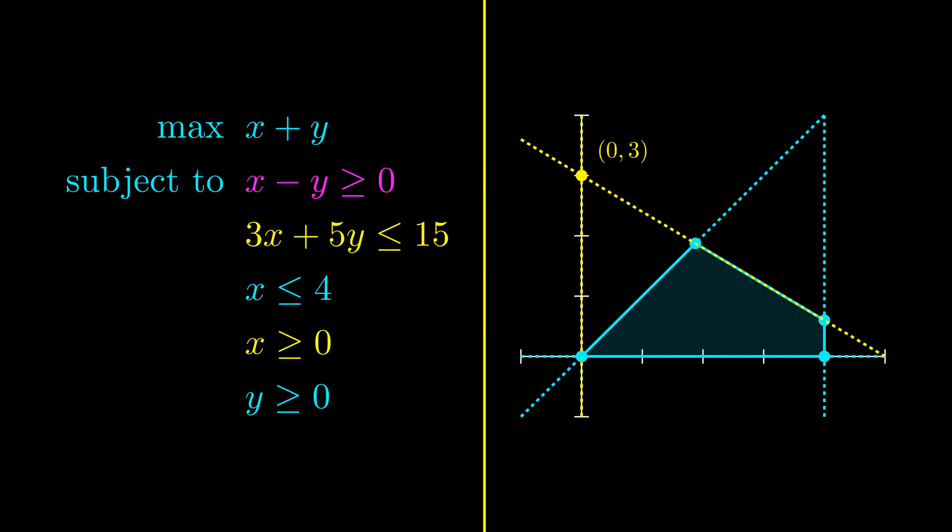To summarize, a vertex is a point that is feasible and where at least two constraints are tight.